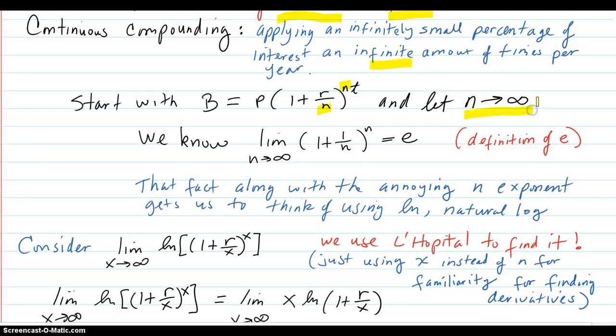So as N goes to infinity, we know the following fact. And it looks surprisingly related to this compounded interest formula. We know that 1 plus 1 over N, all to the N, limits out to e. And in fact, that's the definition of e.